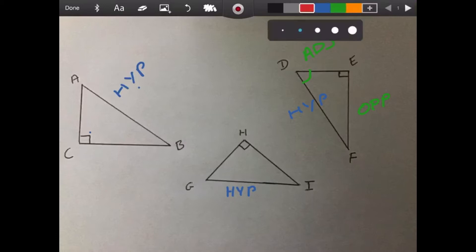So in triangle ABC, if we labelled the angle here at ABC, the opposite is AC and the adjacent is BC. If on triangle GHI, we labelled the angle HGI, the opposite side is now HI, and the adjacent is GH.